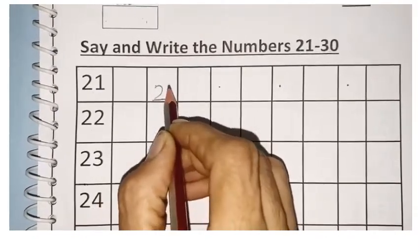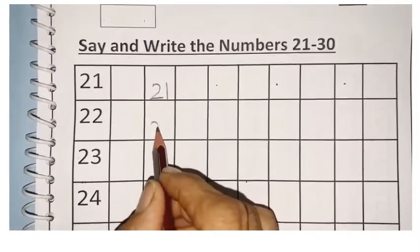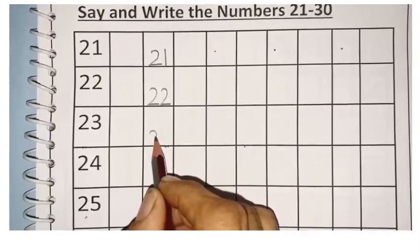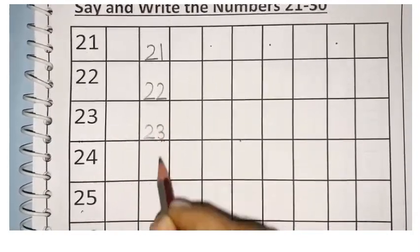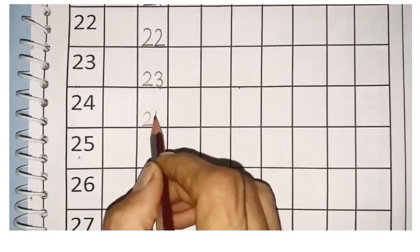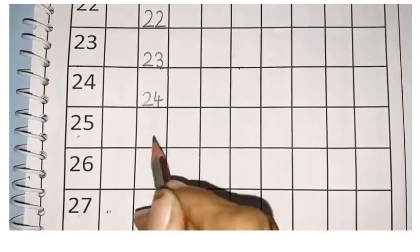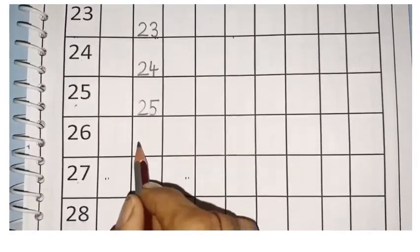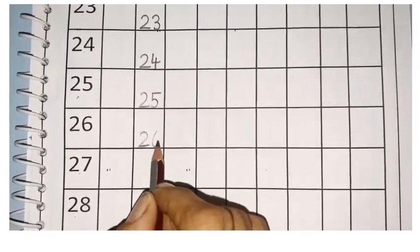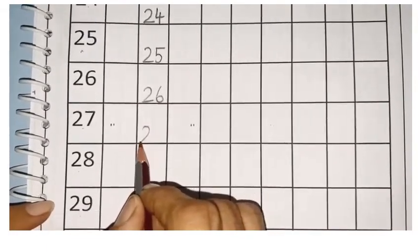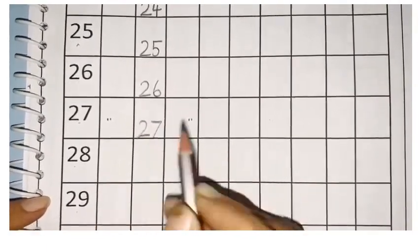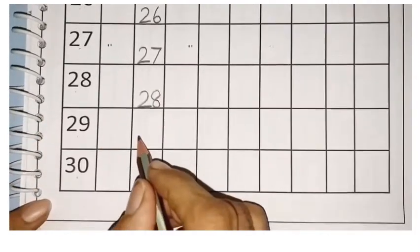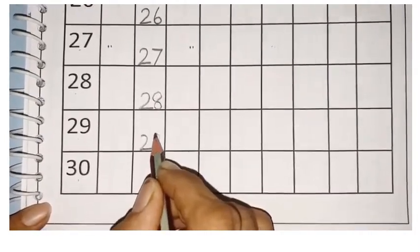Say and write each number three times: 21, 21, 21 — 22, 22, 22 — 23, 23 — 24, 24. Always say and write: 25, 25, 25 — 26, 26 — 27, 27, 27 — 28, 28, 28 — 29, 29.